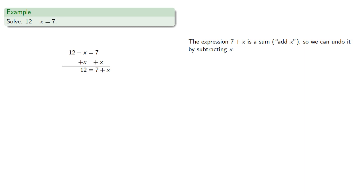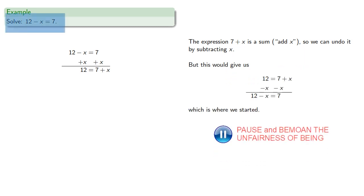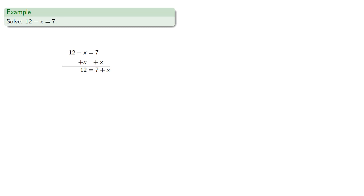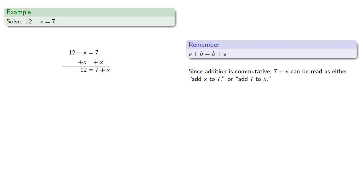Now the expression 7 plus x is a sum, add x, so we could undo it by subtracting x. But if we do that, this would give us which is where we started. So here it's helpful to remember a key property of addition: a plus b is equal to b plus a. Since addition is commutative, 7 plus x can be read as either add x to 7 or add 7 to x. So we can undo add 7 by subtracting 7.